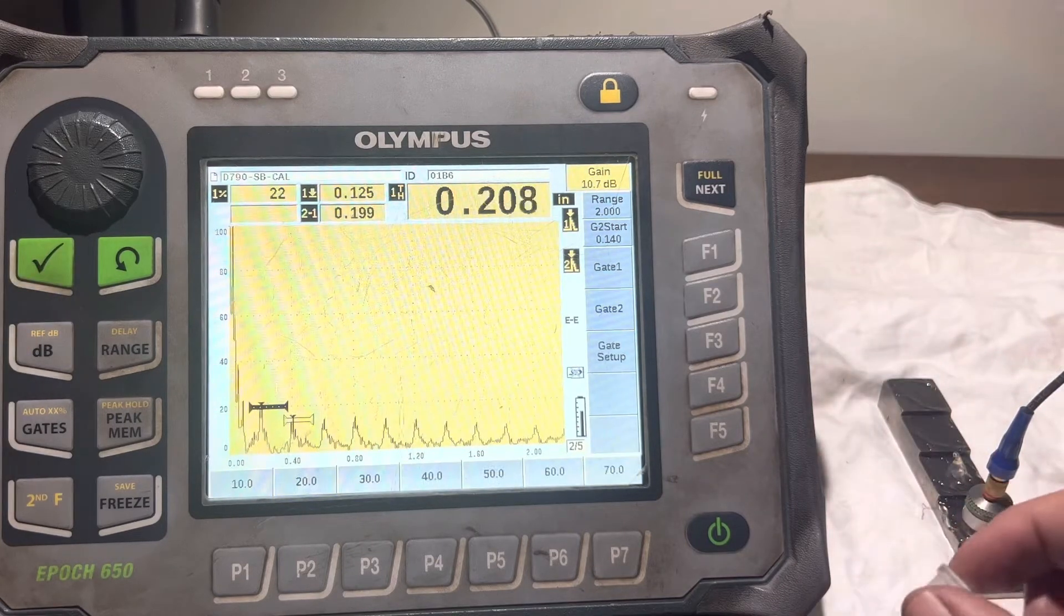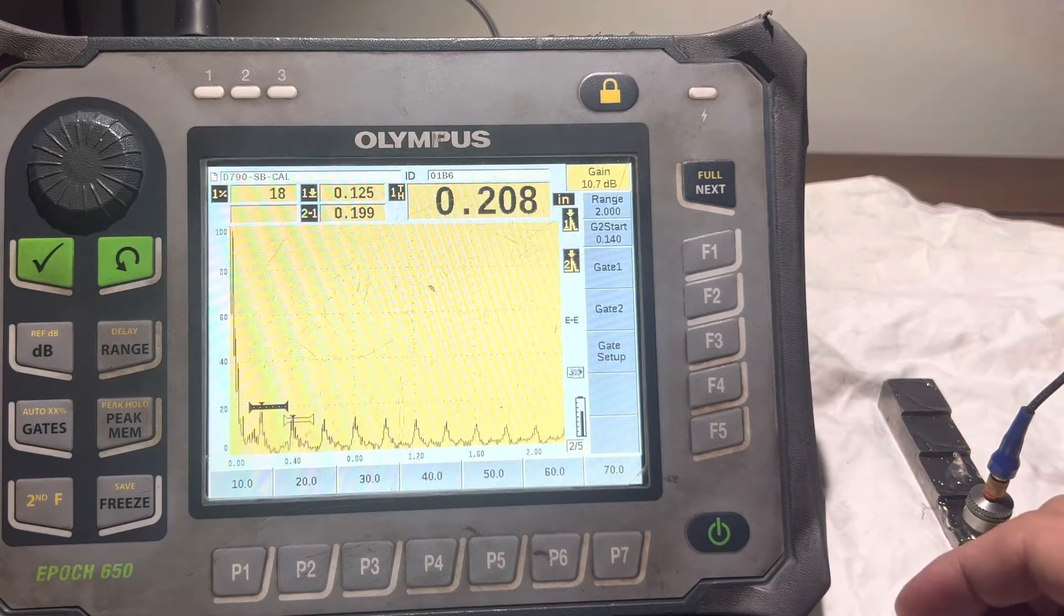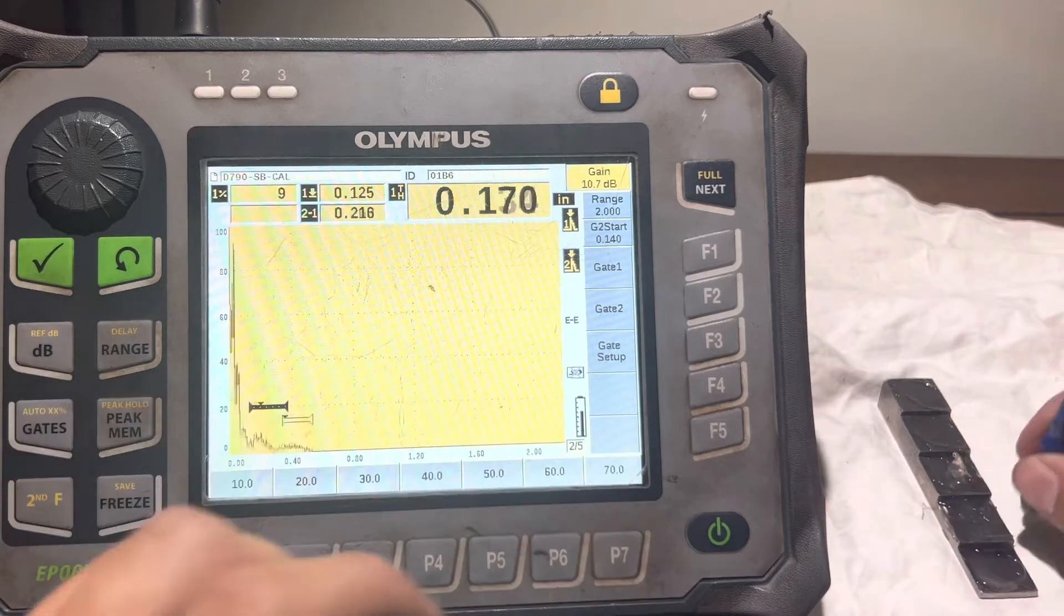Next we're going to use the standoff to calibrate our scope using echo to echo as well and I'll show you.